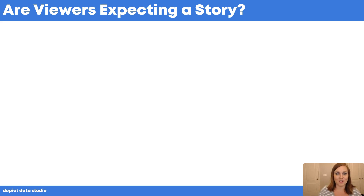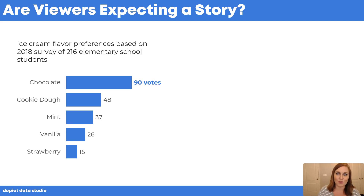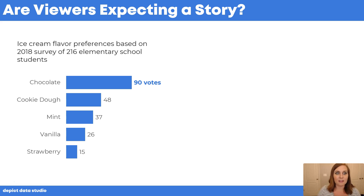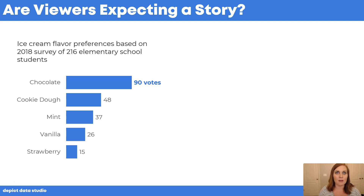Here's the traditional version up first. We're pretending we gave a survey to elementary school students asking about their favorite ice cream flavor and presented the votes in a graph. In this traditional version, the title is topical — ice cream flavor preferences — but there's no takeaway message, no 'so what,' and the colors are all exactly the same. It's up to the viewer to read the graph and figure out the message.